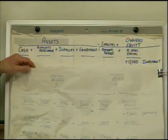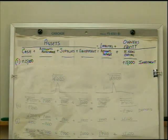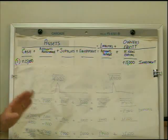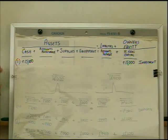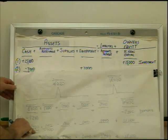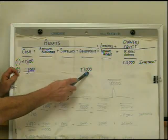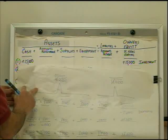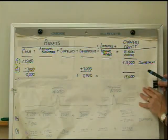Next, we're going to purchase a piece of equipment for cash — $7,000. When we go out and purchase that equipment, we said we're buying it for cash, so that's a use of cash. Cash is going to go down, so we subtract $7,000 from cash. But what did we get for that cash? We got equipment, so our equipment goes up. The next adjustment to the equation is an increase to equipment and a decrease to cash.